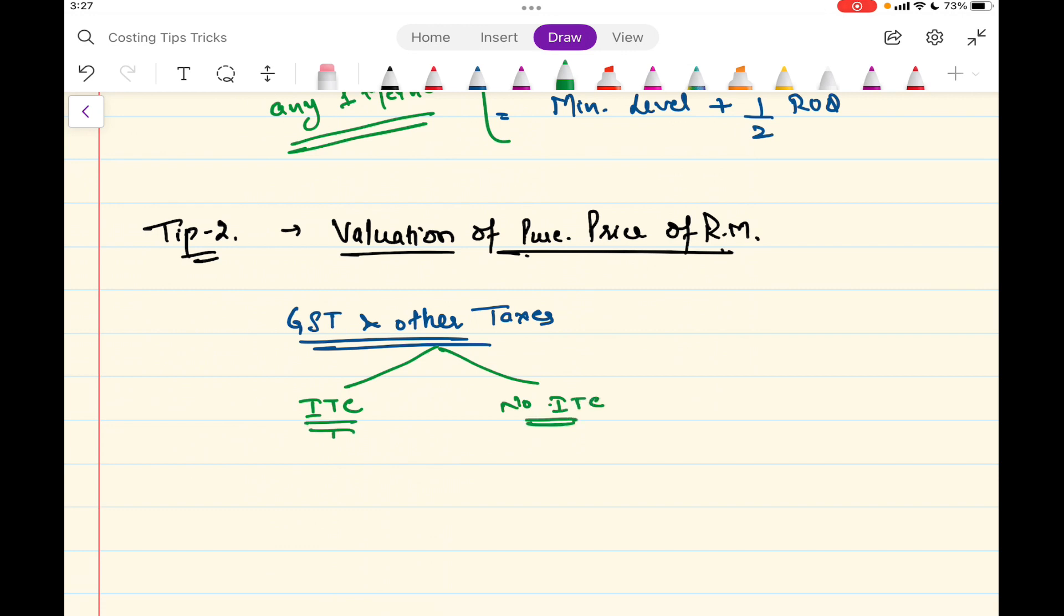If the ITC is available, then you have to simply ignore that item because what we are taking is we are giving by one hand and taking back by another hand. And if the ITC is not available, then it will form the part of your cost.